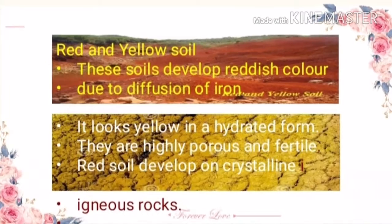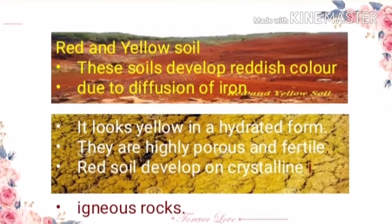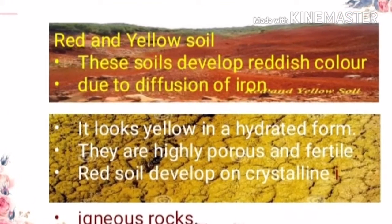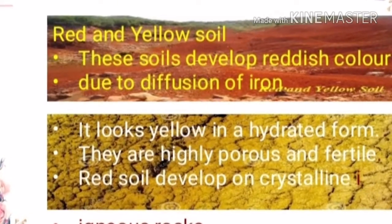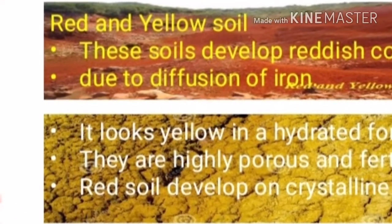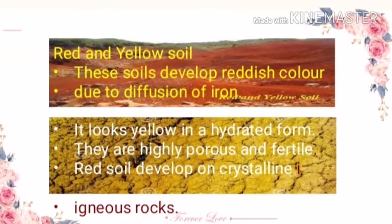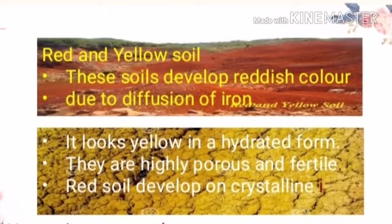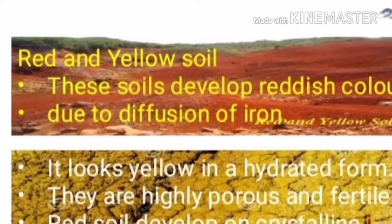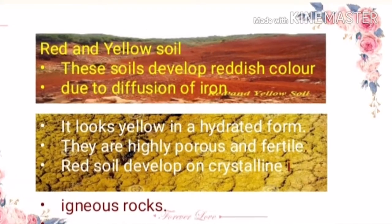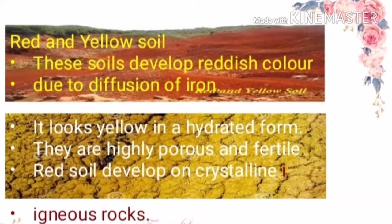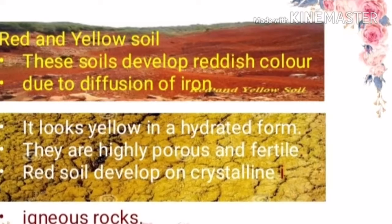Next is the red and yellow soil. The color of the soil is reddish due to the diffusion of iron in the crystalline and metamorphic rocks. It looks yellow in the hydrated form, and they are highly porous. Red soil dwells on crystalline igneous rocks in areas of low rainfall.